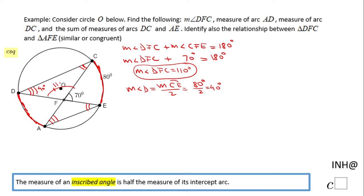We know DFC is 110, so we can go to triangle DFC and we know the sum of the interior angles of a triangle is 180. So the measure of angle D plus the measure of angle DFC plus the measure of angle C equals 180.